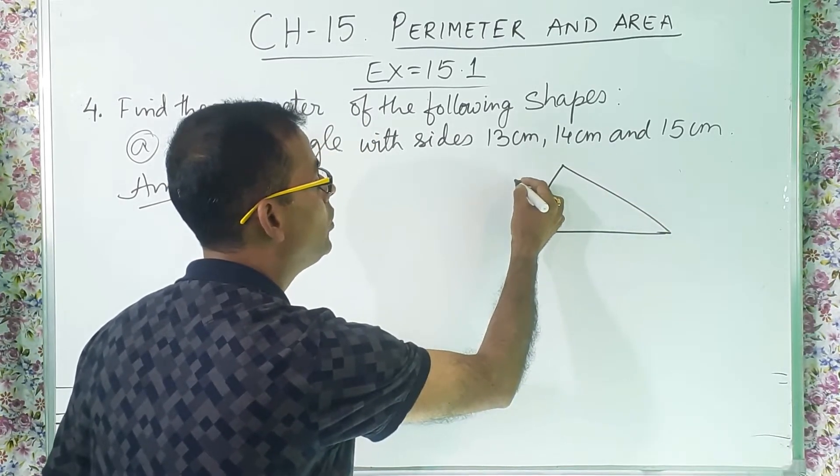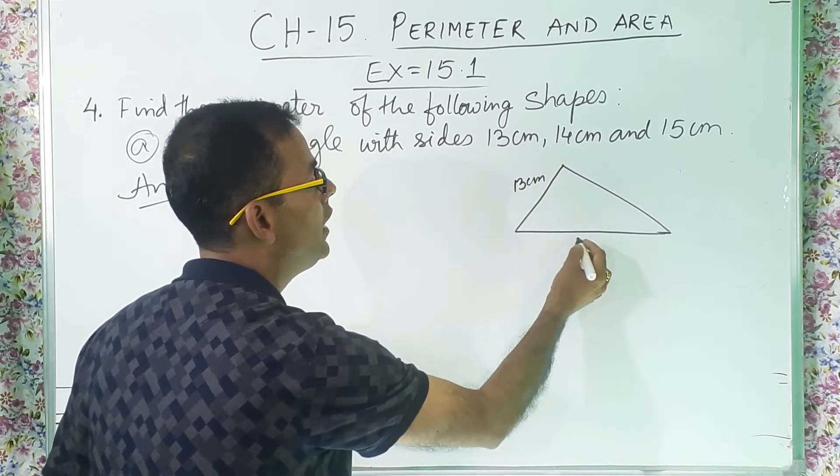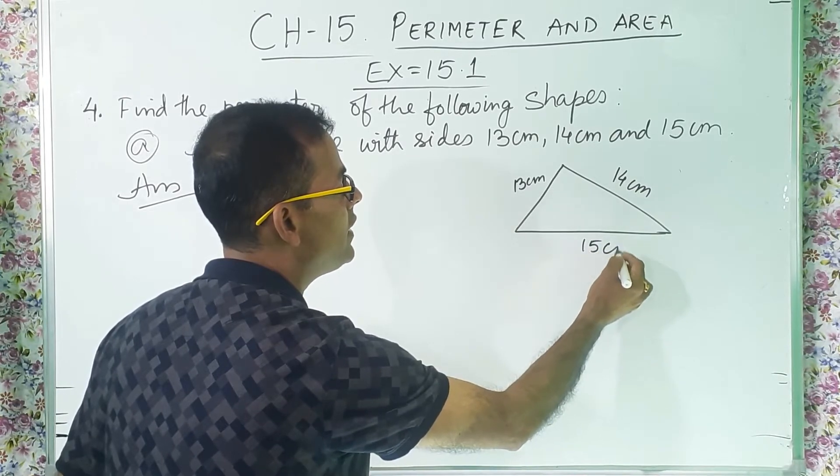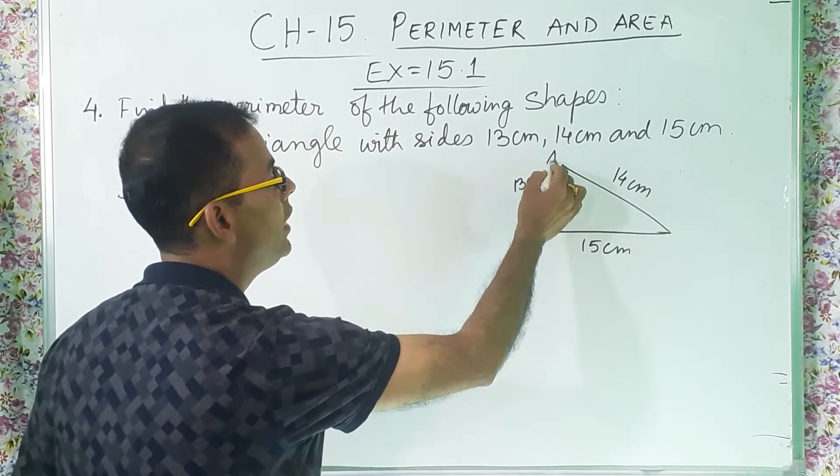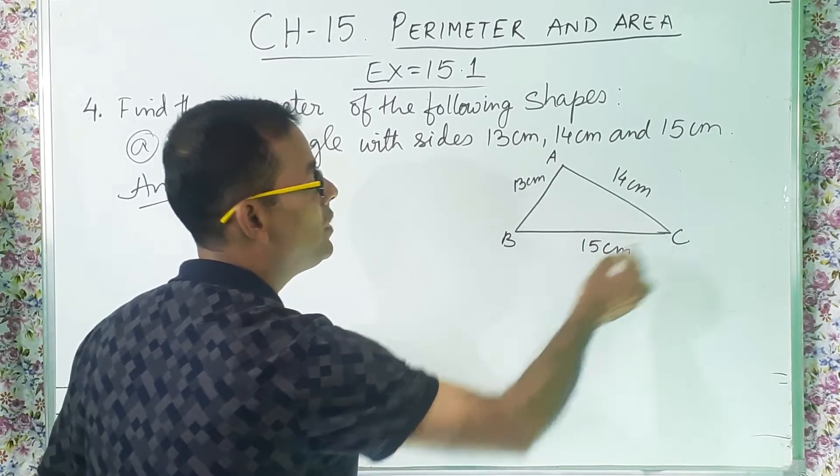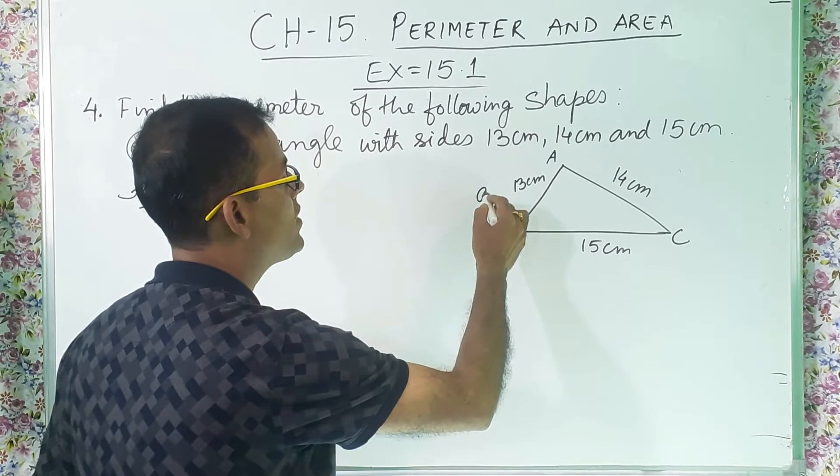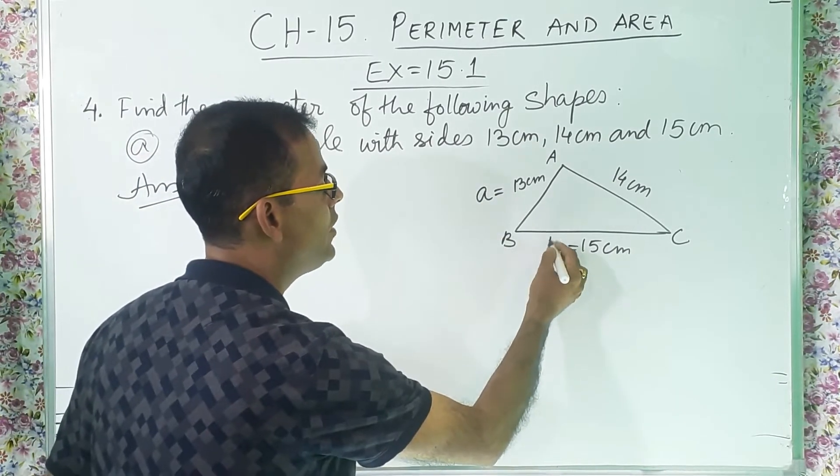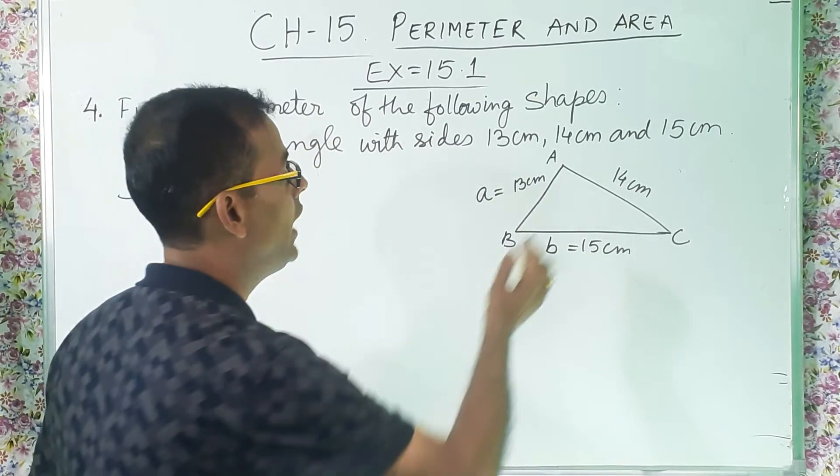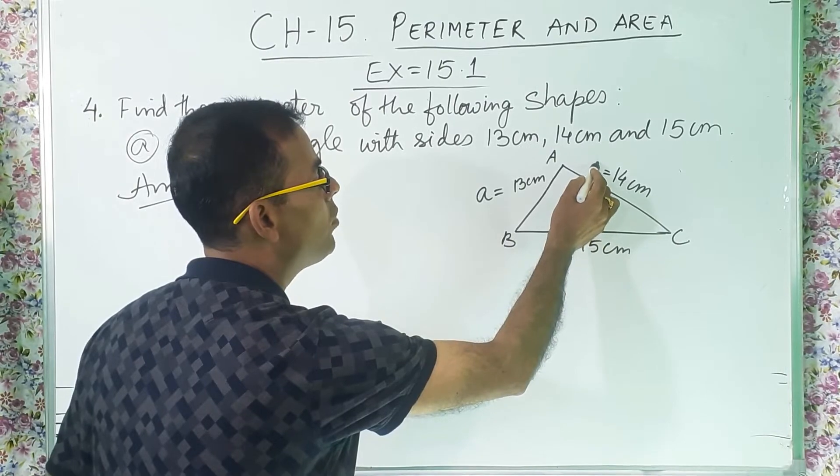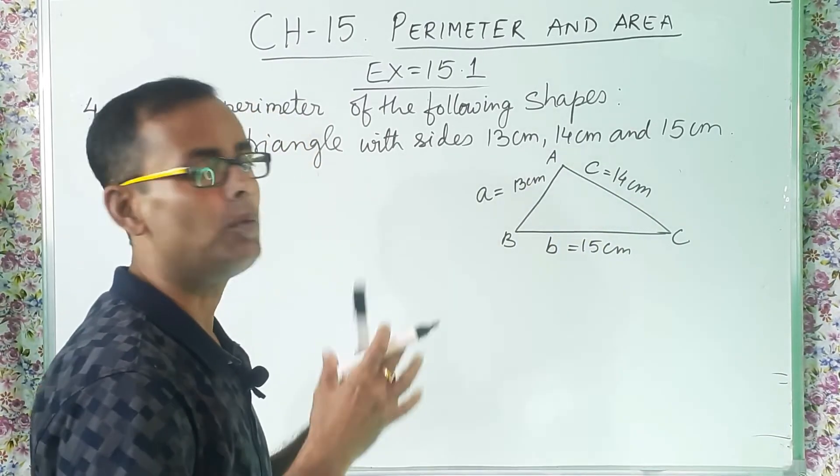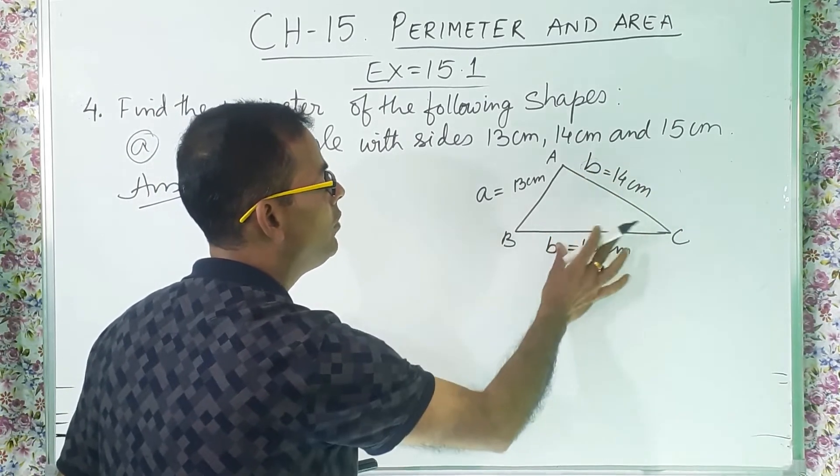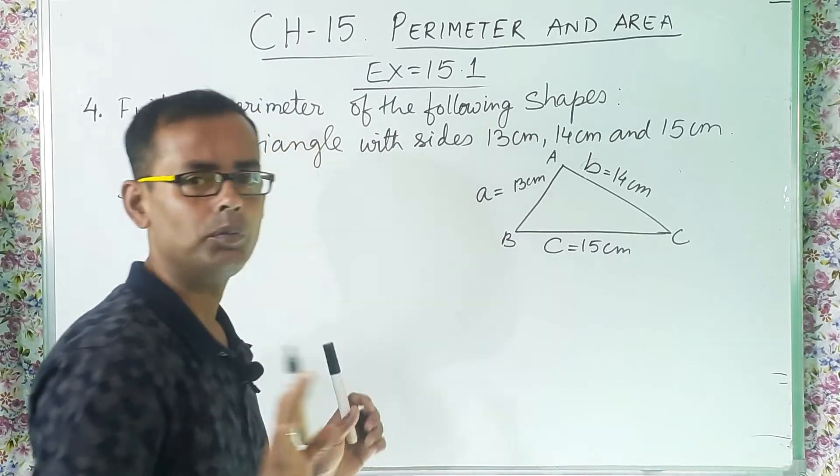And we will write one side 13 centimeter, another side suppose this one 14 centimeter and this one 15 centimeter. Now I can give a name A, B, C. Now first side I will represent as small a, second side I will represent as small b, and the third side I will represent as small c. This combination you can take. If you want, you can make this one also b. If you want, you can make this one c, no problem.